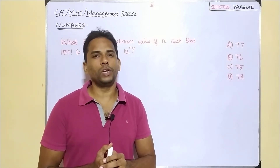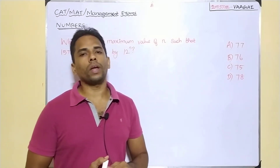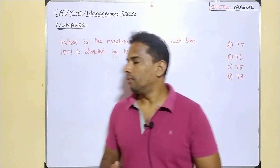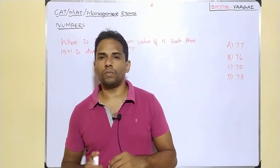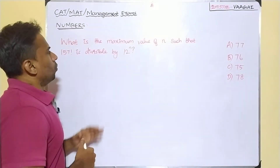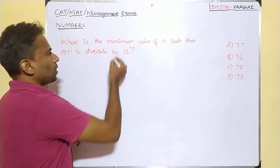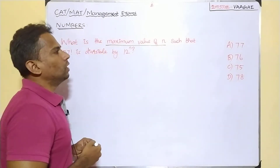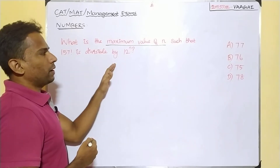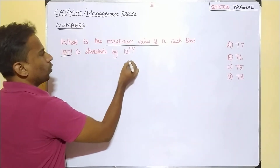Hi and hello dear friends, welcome back once again to our channel Vagai Academy of Mathematics. This playlist is where you can find video lessons for CAT, MAT, and other management exams. This session we have an interesting question from the concept of numbers. The question is: what is the maximum value of n such that 157 factorial is divisible by 12 raised to the power n?